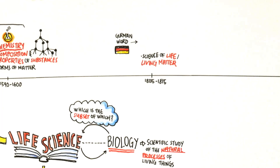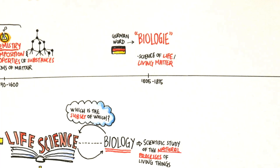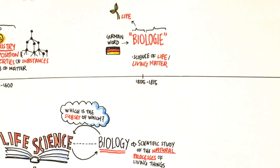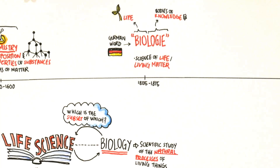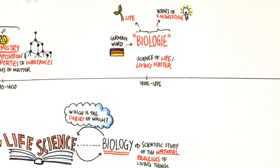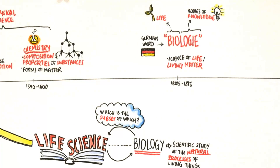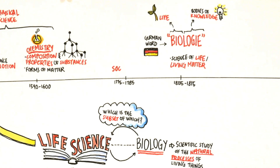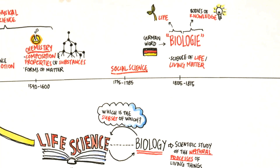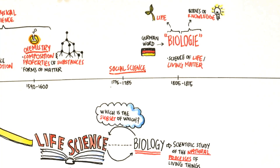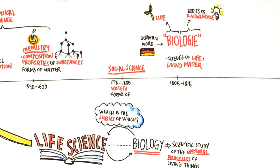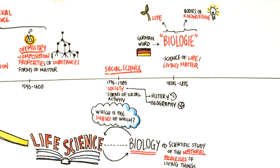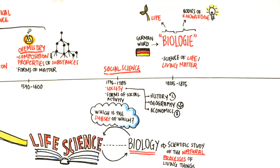It came from the German word biology, which is a combination of bio, which means life, and logit, which means body of knowledge. We must not forget social science — a science that deals with aspects of society or forms of social activities, for example history, geography and economics.